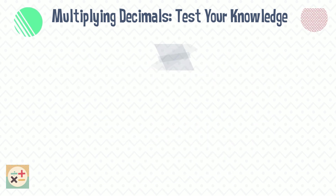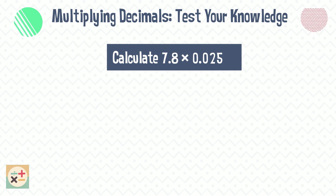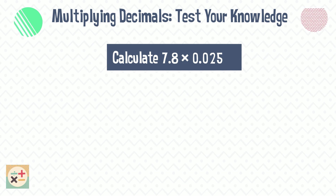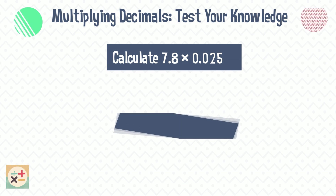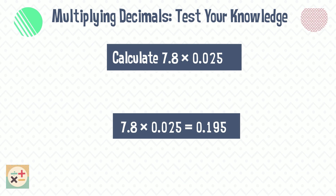Question six: calculate 7.8 times 0.025. 7.8 times 0.025 equals 0.195.